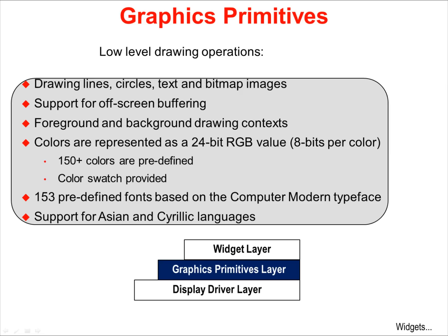The middle layer in the graphics library is graphics primitives. This layer provides drawing support for lines, circles, text, and bitmap images, as well as support for off-screen buffering. Many times you don't want to write directly to the display and have the viewer see you doing it — instead you can write to an off-screen buffer and then swap and show that buffer. Foreground and background drawing contexts are important so that you can put objects behind or in front of each other. Colors are represented as 24-bit RGB values and there are 150 predefined colors already provided in the library. Also in the back of the user's guide is a list of 153 predefined fonts based on the computer modern typeface, and Asian and Cyrillic languages are supported.